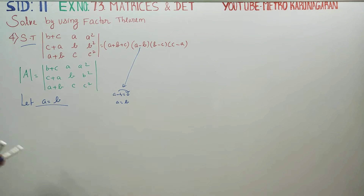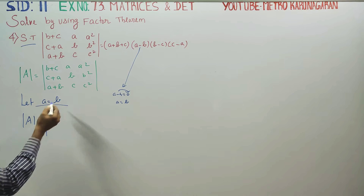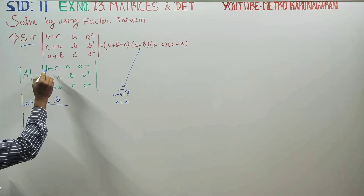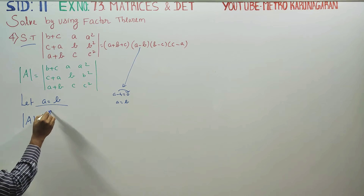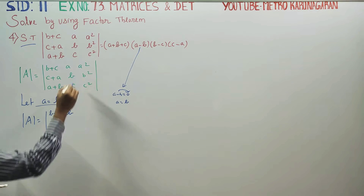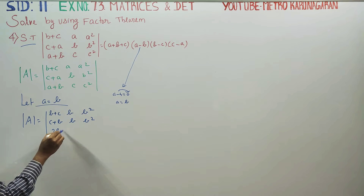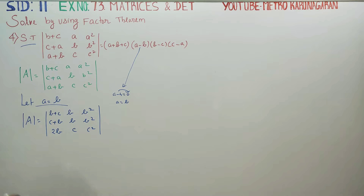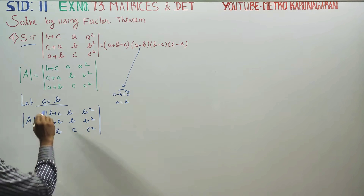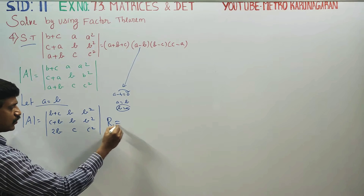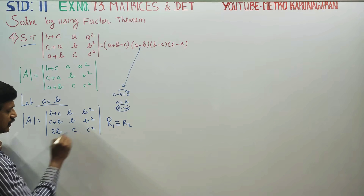Let a equal b and substitute into determinant A. When a equals b, if you look at rows R1 and R2, row 1 becomes (b+c, b, b²) and row 2 becomes (b+c, b, b²). They are identical, so this answer is zero.